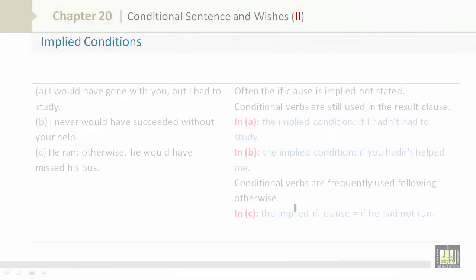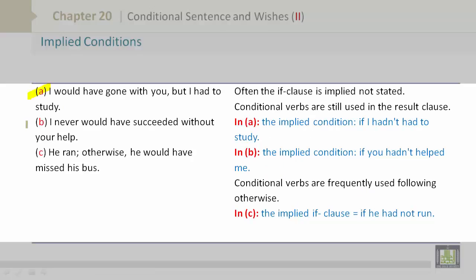Implied conditions. I'll go through all the examples A, B, and C, and then I'll explain to you what each one means. So A, I would have gone with you, but I had to study.